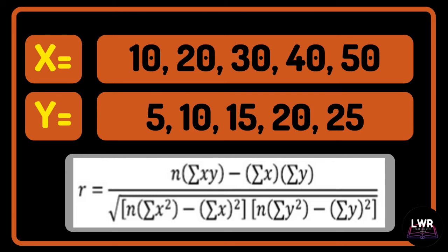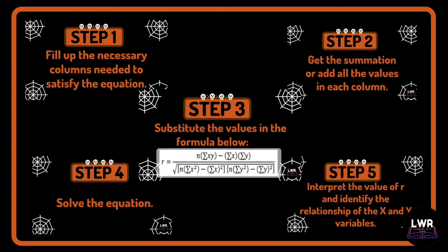Feel free to pause the video and remember to follow the five steps in solving Pearson's correlation coefficient. Step 1: fill up the necessary columns. Step 2: get the summation. Step 3: substitute the values in the formula. Step 4: solve the equation. And Step 5: interpret the value of r and identify the relationship of x and y variables.